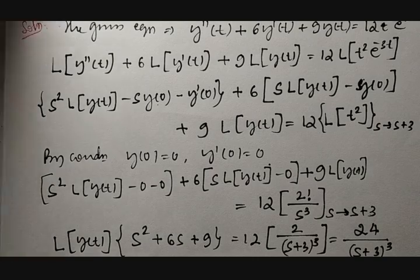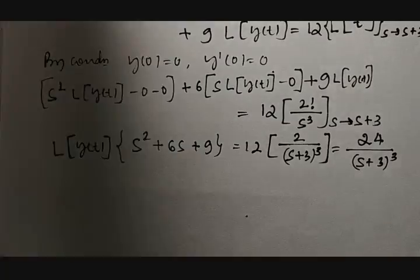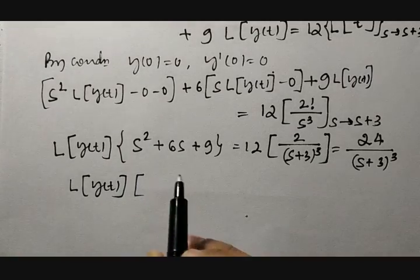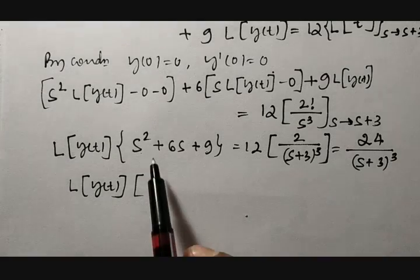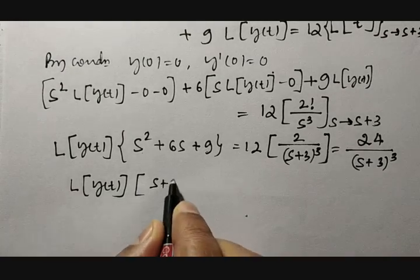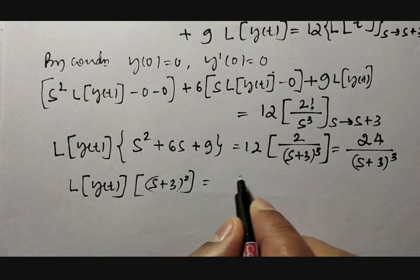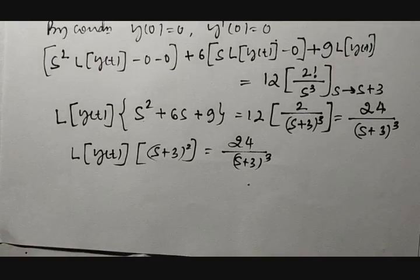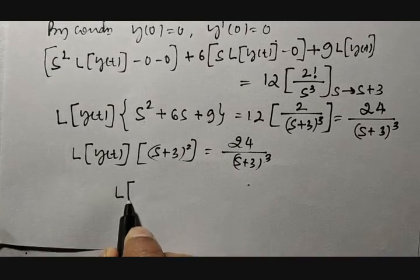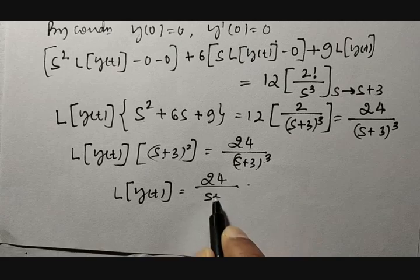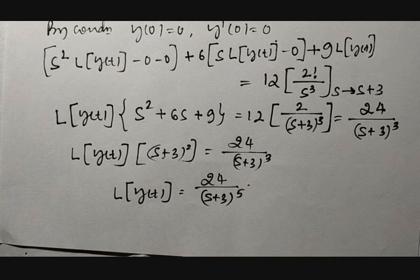Therefore, taking the LHS: L{y(t)} · (s² + 6s + 9) = 24 / (s+3)³. The bracket s² + 6s + 9 factors as (s+3)². So L{y(t)} · (s+3)² = 24 / (s+3)³, which gives L{y(t)} = 24 / (s+3)⁵.